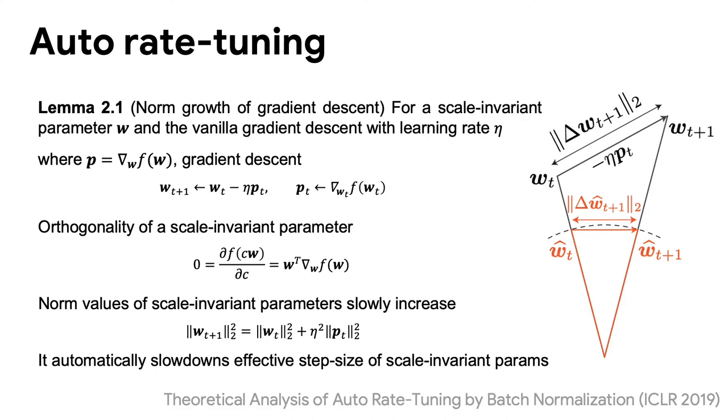When trained with a gradient descent optimizer, the norm value of scale invariant parameters slowly increases. It slowdowns the training process of scale invariant parameters. Another study shows that the norm increases automatically control step size of optimizer.